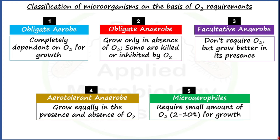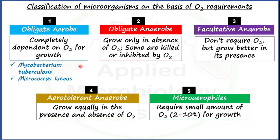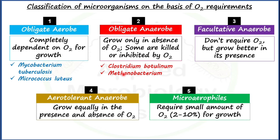Now let's look at examples of each type. For obligate aerobs, Mycobacterium tuberculosis — the well-known cause of tuberculosis — and Micrococcus luteus are very good examples of strict aerobs.